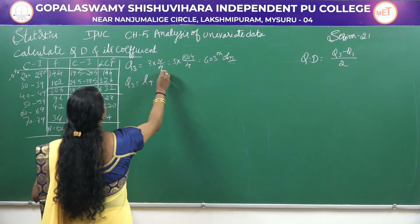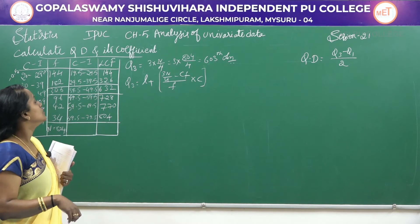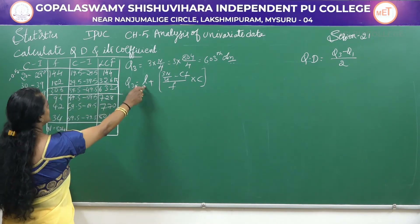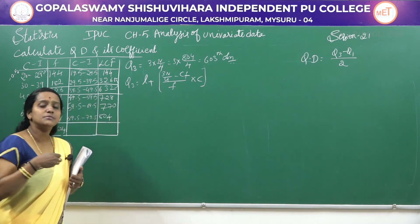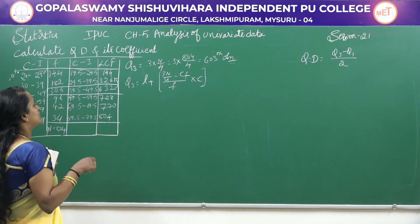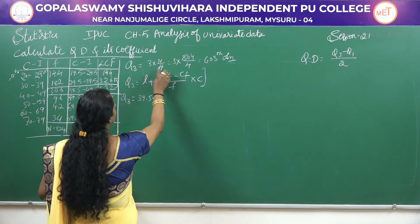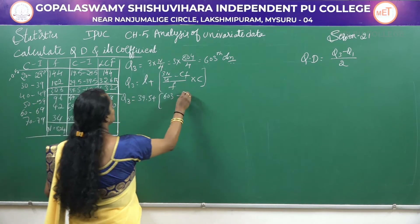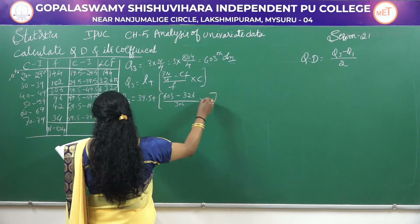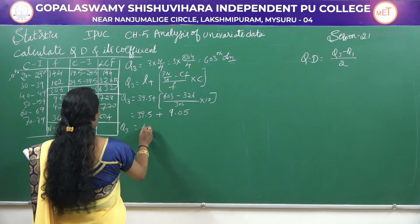The formula to find Q3 is: L + (3N/4 − CF) / F × C. Here CF means the previous cumulative frequency, F means the corresponding frequency, L is the lower limit, and C is the width of the class interval, which is 10. So Q3 = 39.5 + (603 − 326) / 306 × 10 = 39.5 + 9.05. Our Q3 value is 48.55.